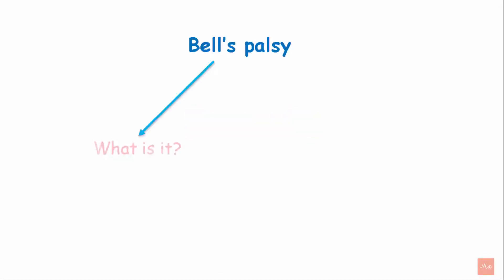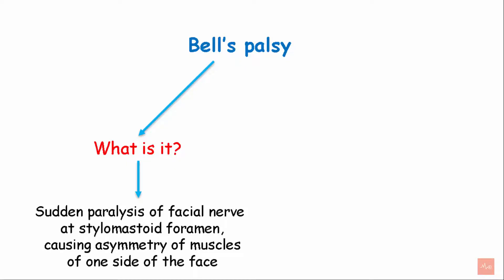Welcome back to MediClass. Bell's Palsy. What is Bell's Palsy? It is a sudden paralysis of the facial nerve at the stylomastoid foramen, causing asymmetry of the muscles on one side of the face.